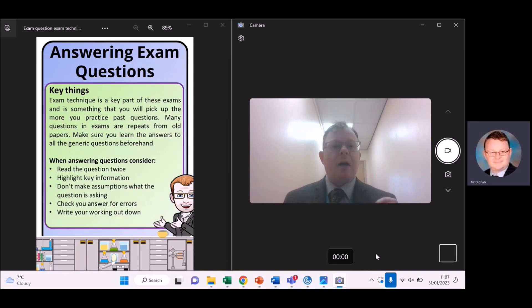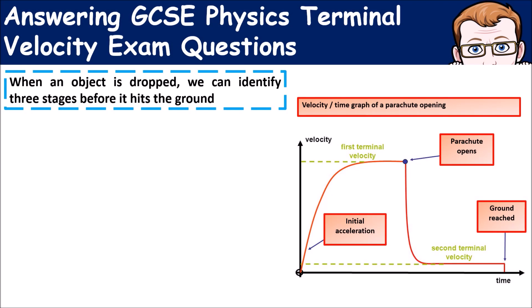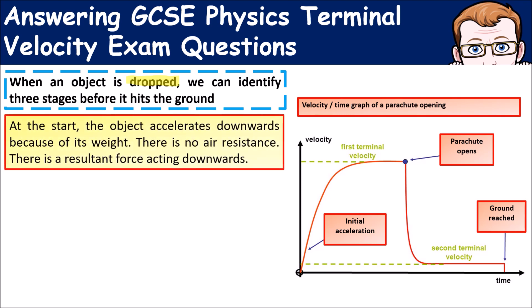Let's have a look at a question. If we consider terminal velocity, we're starting off and need to think about when objects are dropped. At the start, when an object is dropped, it accelerates downwards because of its weight caused by the force of gravity. At first, there's very little air resistance pushing back on it, so the resultant force is acting downwards, which is why it's accelerating.